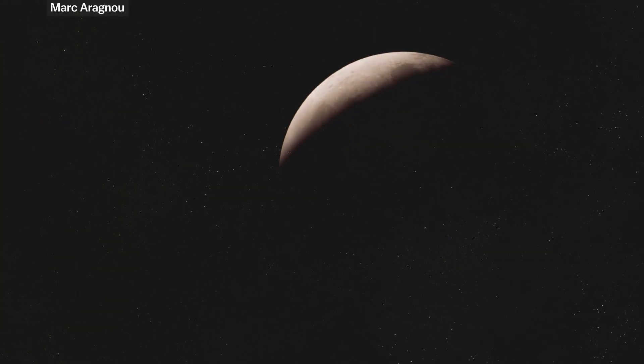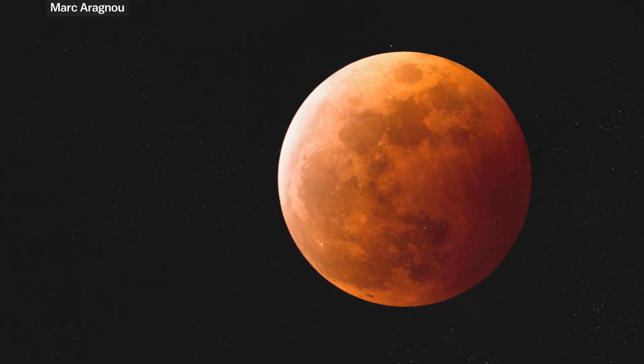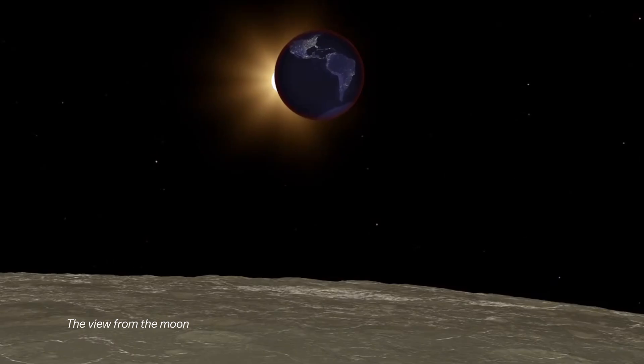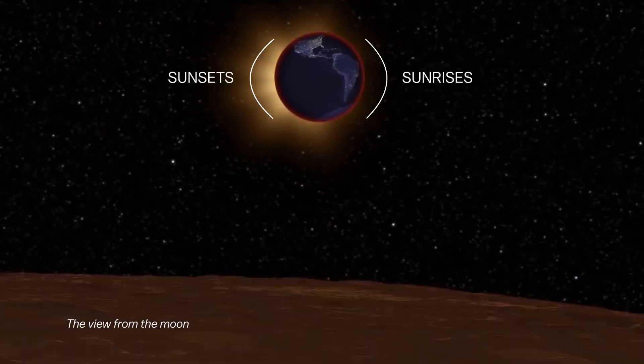The moon often turns red during a total lunar eclipse because our planet's atmosphere scatters the bluer wavelengths of light while the longer, redder wavelengths pass through. Or to put it another way, a total lunar eclipse projects all of the world's sunsets and sunrises onto the moon.